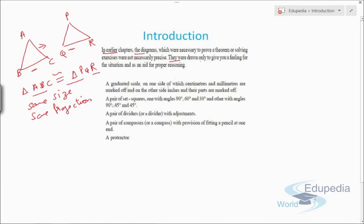They were drawn only to give you a feeling. It's like you are just feeling that these are congruent, they should be of the same size. However, when you see on the screen, they are not exactly the same size, but you have a feel that they should be equal or they should be of the same size.